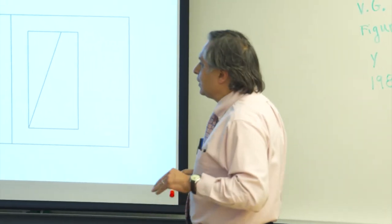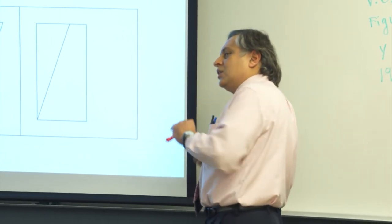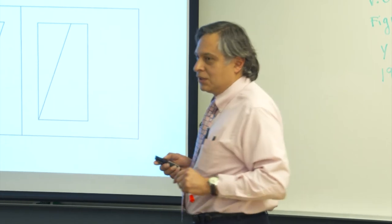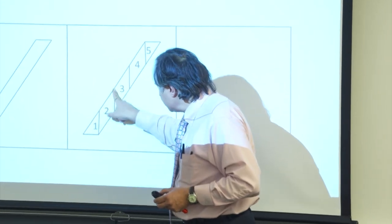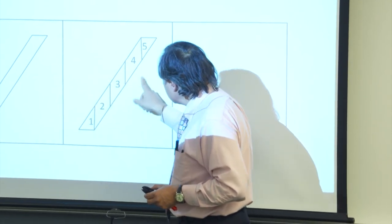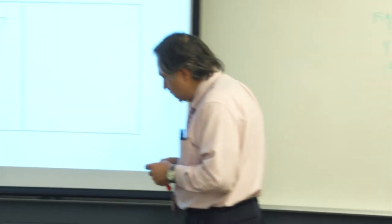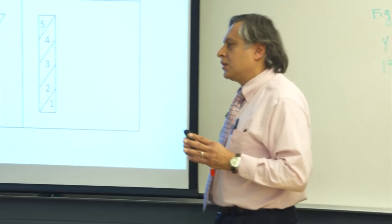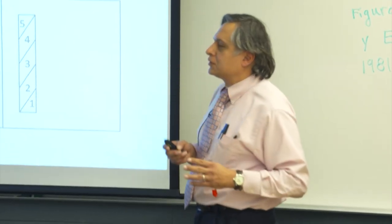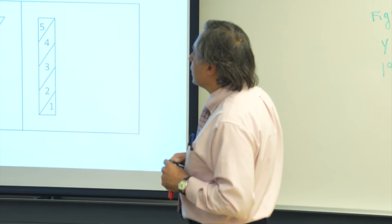Somebody could ask: what if the parallelogram is too skinny or too far to the right? We can still do that. The way we build the cuts is you go across the same distance as the base and cut up. Same distance, make a cut; same distance, make a cut. Then we can move those little parallelograms to make the rectangle. So even if the parallelogram is tilted too far on one side, we can still cut and put together a rectangle.